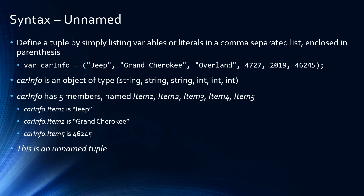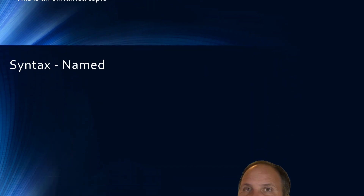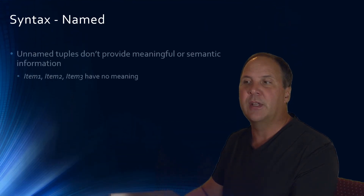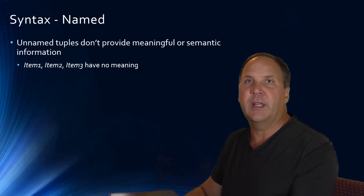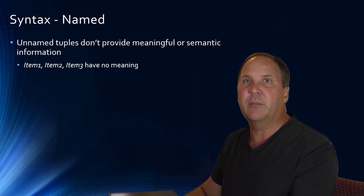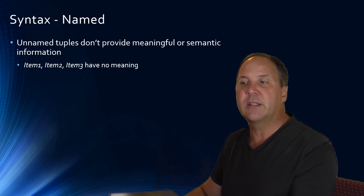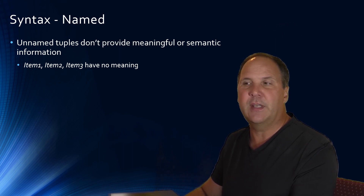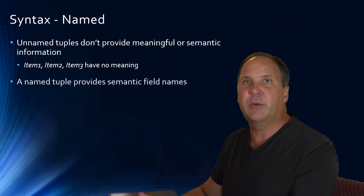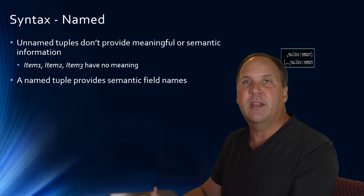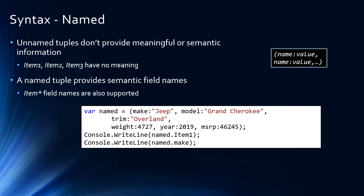Now, a named tuple is a lot more valuable because with the unnamed tuple, the names of the fields — item1, 2, 3 — they don't really carry any semantic meaning, so they're not as helpful as they could be. So with the named tuple, we can assign names to those fields, and it's pretty easy to do. We just put the name of the field, then a colon, and then the value we're associating that name with. So now we have named value pairs.